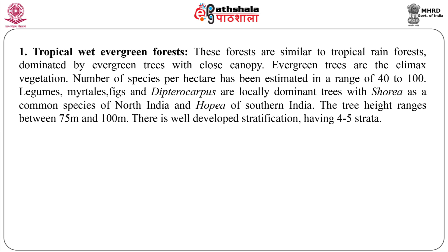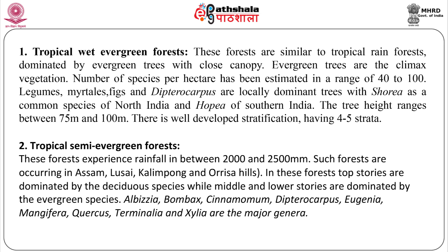The first is the tropical wet evergreen forest. These forests are similar to tropical rainforest, dominated by evergreen trees with close canopy. Evergreen trees are the climax vegetation. Number of species per hectare has been estimated in a range of 40 to 100. The next is the tropical semi-evergreen forest. These forests experience rainfall between 2000 to 2500 millimeters. Such forests occur in Assam, Lusai, Kalimpong and Orissa hills. In these forests, top stories are dominated by the deciduous species, while middle and lower stories are dominated by the evergreen species.